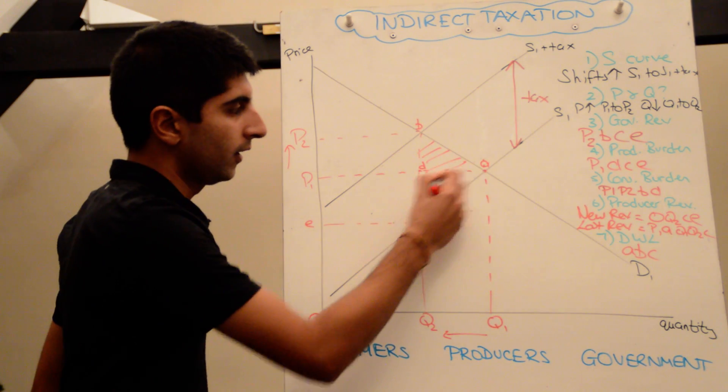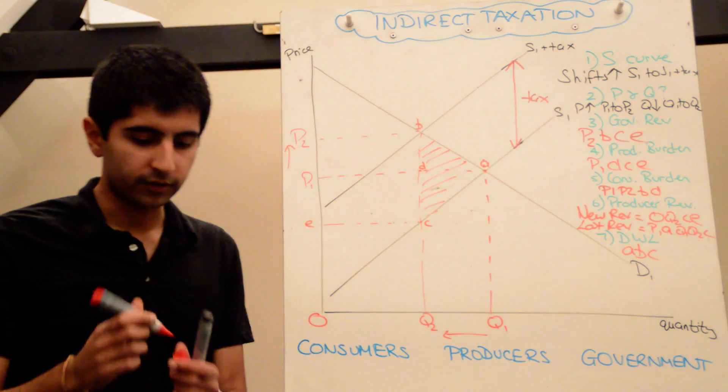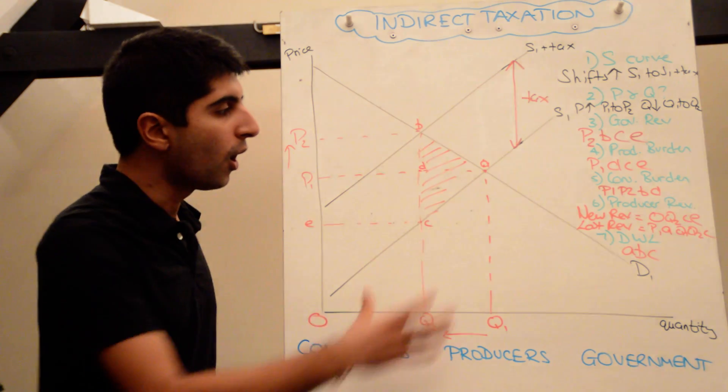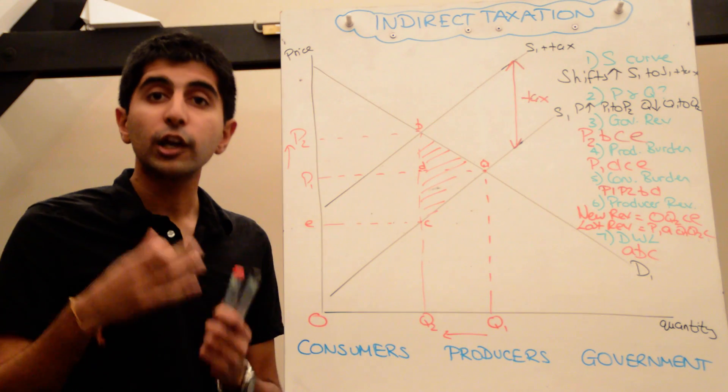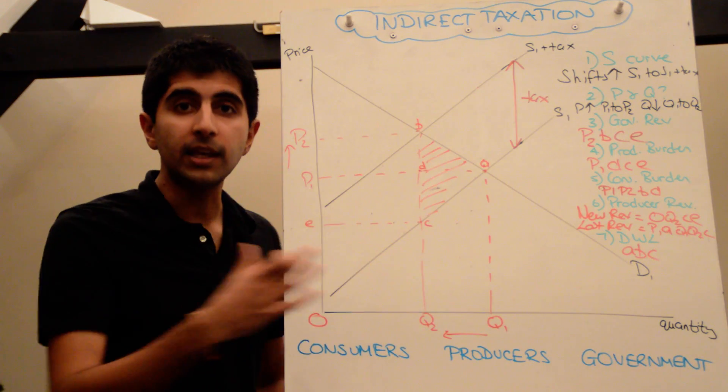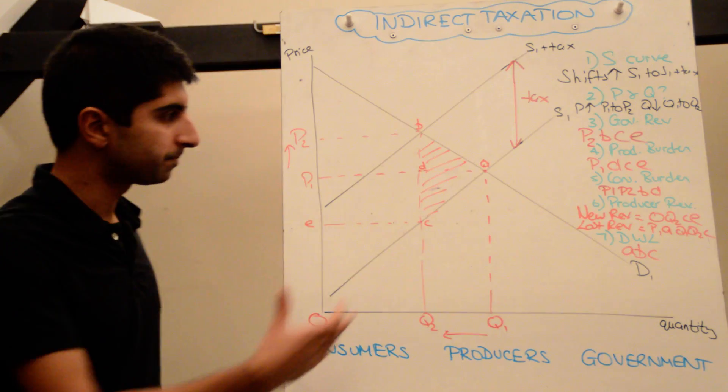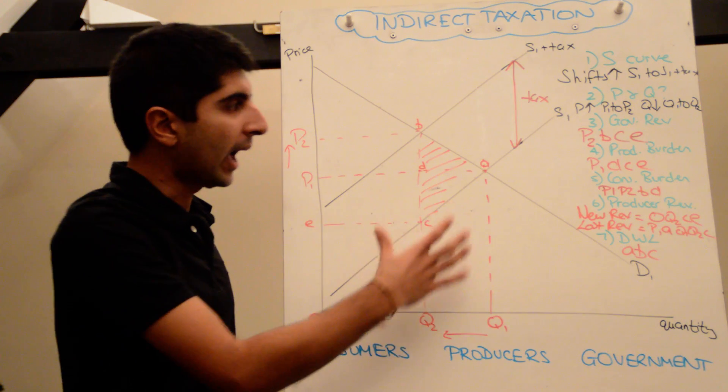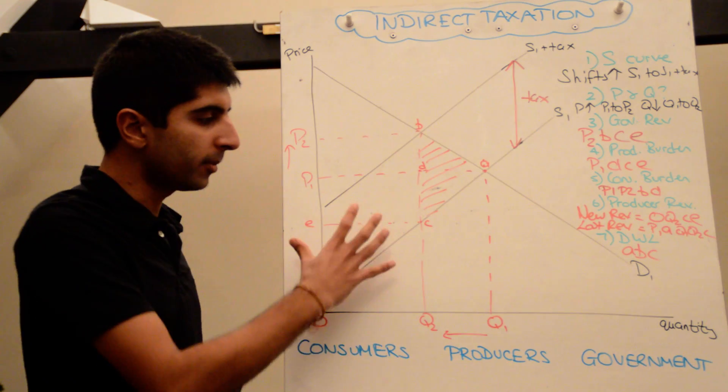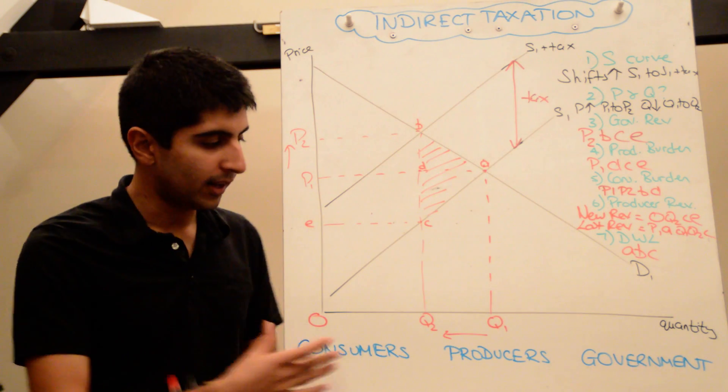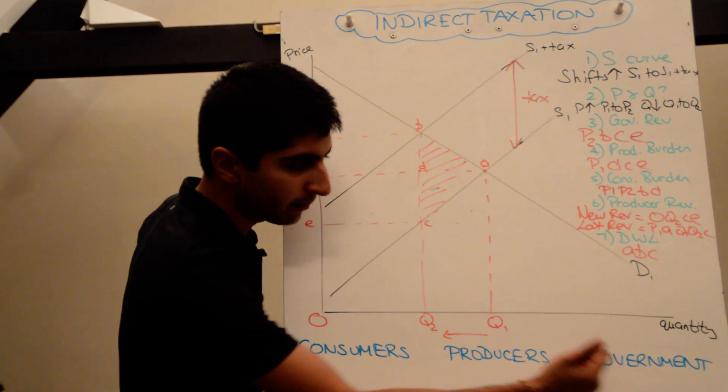This triangle here represents the deadweight loss to society. I'm going to make a video on why an indirect tax causes a deadweight loss. It's a very interesting concept and something you should understand. Hopefully now you've understood how we can dissect this diagram and the impacts on different stakeholders. We can go one stage further though and really in detail analyze the impacts on consumers, producers, and the government.